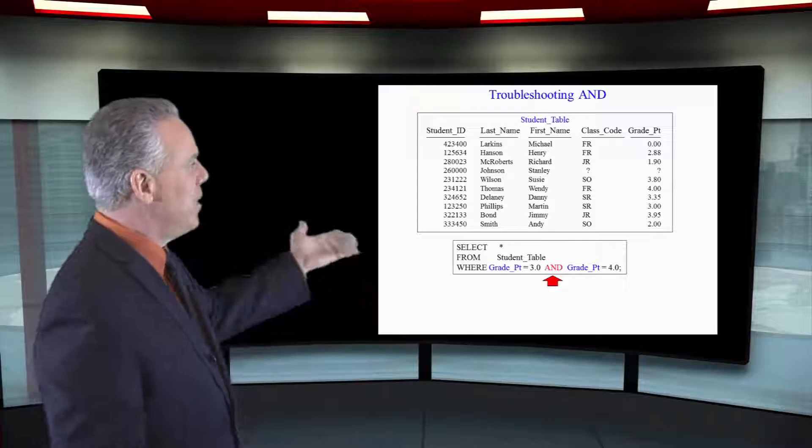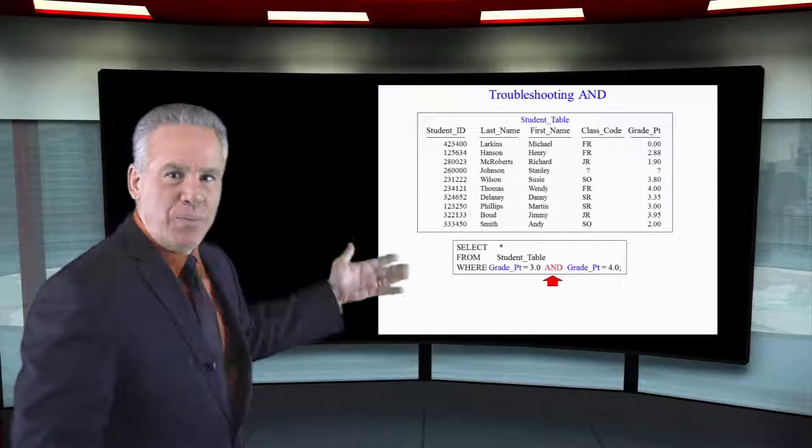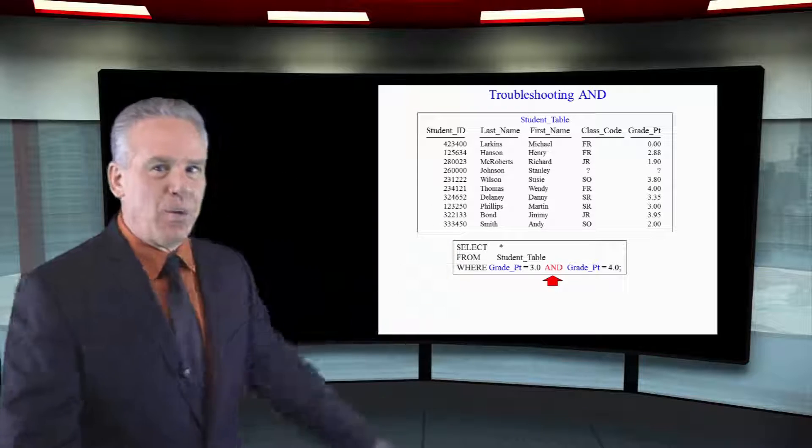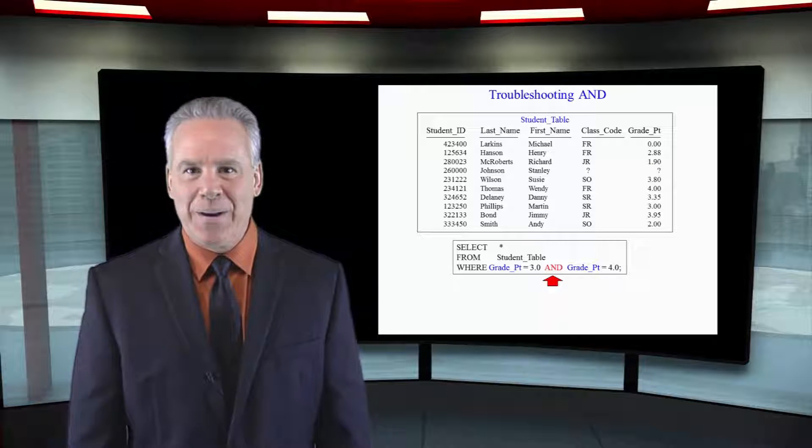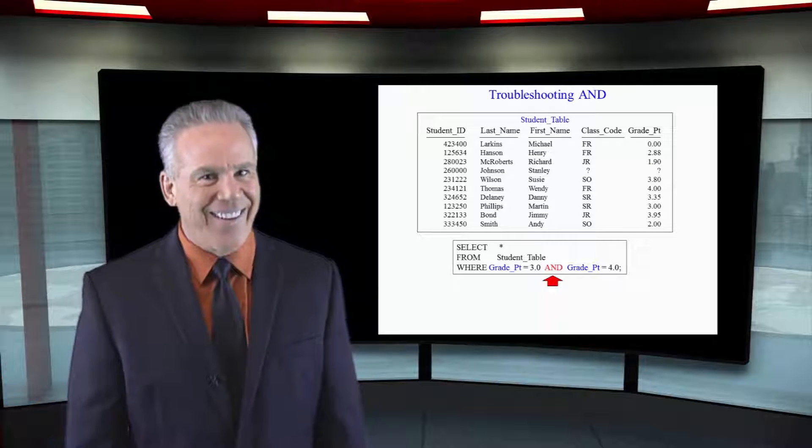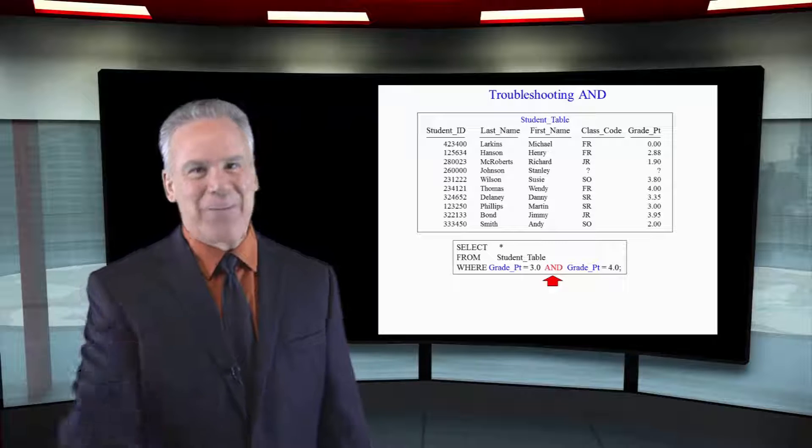So, if you have the same actual column, grade point equals 3.0 and grade point equals 4.0, no rows are going to come back. This isn't going to error. You're just going to get nothing back on the report.